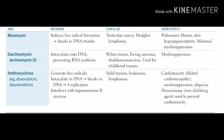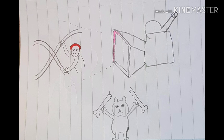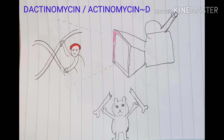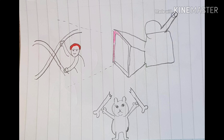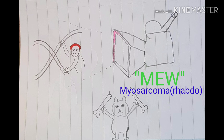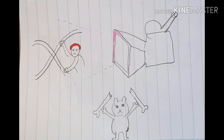The next drug is dactinomycin, or actinomycin D. This picture of a little boy acting in front of a camera should come to mind — 'acting' reminds you of actinomycin. The mechanism of action is that it intercalates into the DNA and prevents RNA synthesis. He is acting to produce the sound of a cat — 'mew' — and that reminds you of M-E-W: M for myosarcoma (rhabdomyosarcoma), E for Ewing sarcoma, W for Wilms tumor.